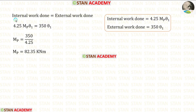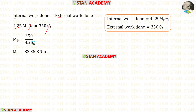Now let us equate the internal work done and the external work done. We can eliminate theta 1 and take 4.25 to the denominator. Finally, we get Mb equal to 82.35 kN·m.